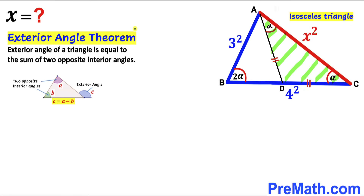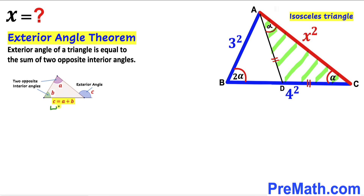Now let's recall the exterior angle theorem: the exterior angle of a triangle equals the sum of the two opposite interior angles. Here, angle ADB is our exterior angle, equal to the sum of the two opposite interior angles alpha and alpha. So therefore this angle is 2 times alpha.